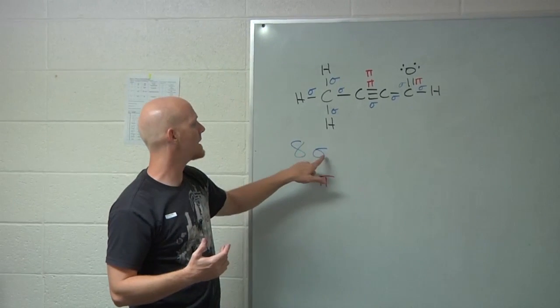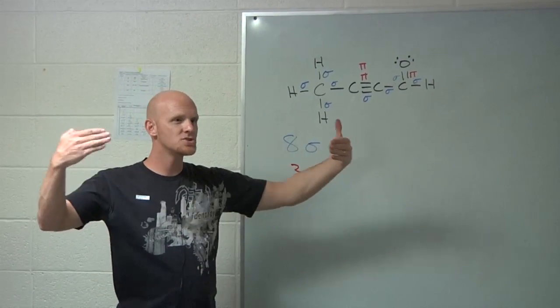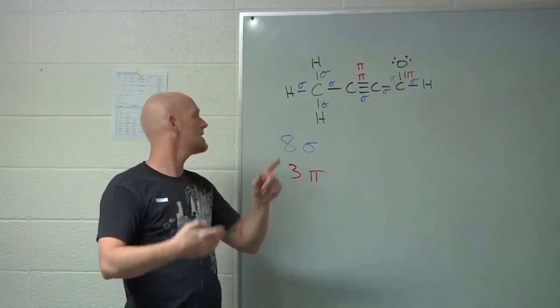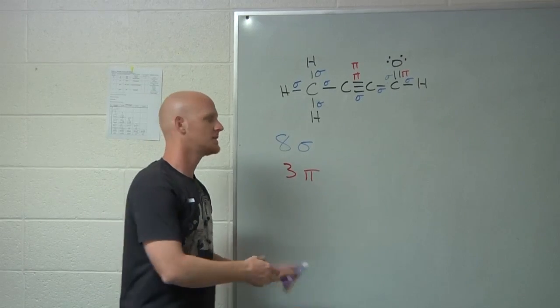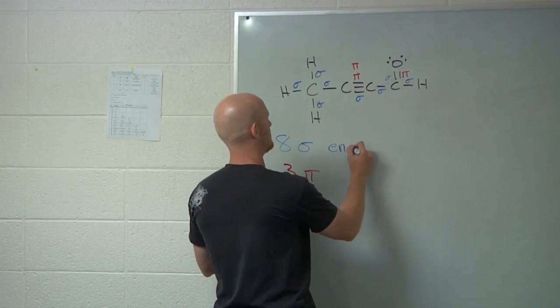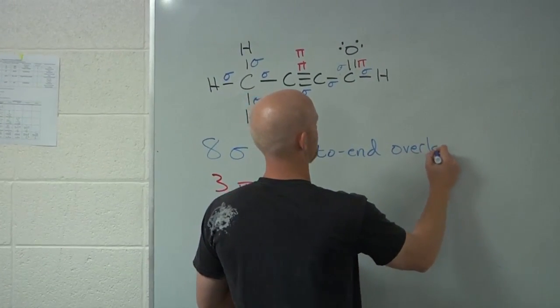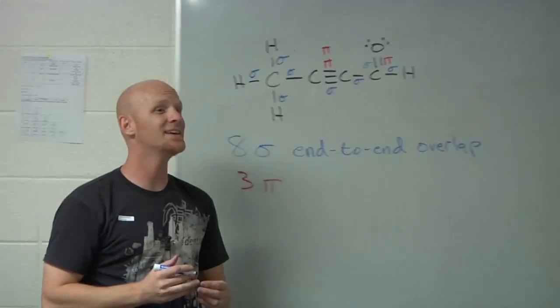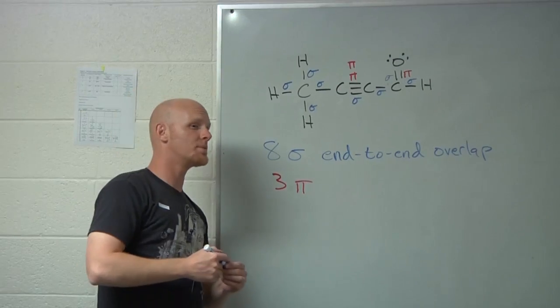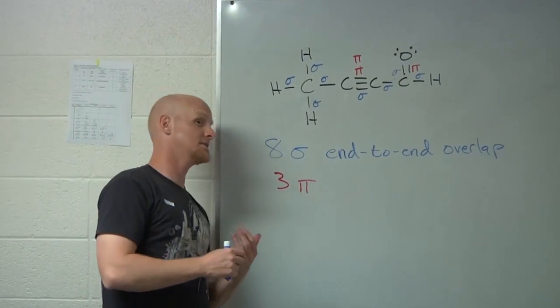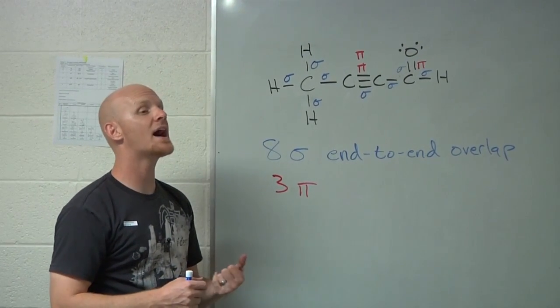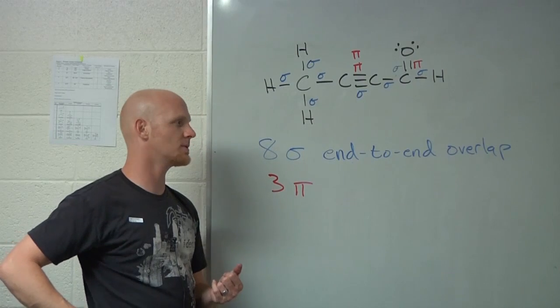Well, you can overlap any two kind of orbitals. And as long as you overlap them in an end-to-end fashion, that's called sigma bond. So it's end-to-end overlap of orbitals. And it can be any kind of orbital can be involved. S orbitals, p orbitals, technically d orbitals, or any of the hybrid orbitals we kind of alluded to earlier as well.